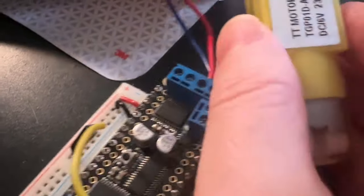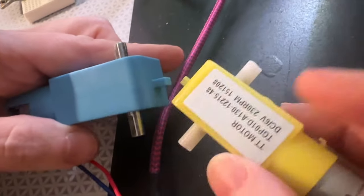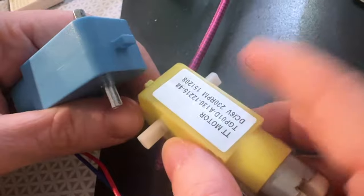All right, Lady Ada, what is this? So we've got these two motors here. This is a plastic gear motor. What's interesting about this motor is it's like double-headed. It's got the rotating part coming out both sides.